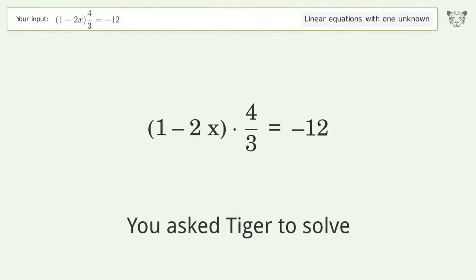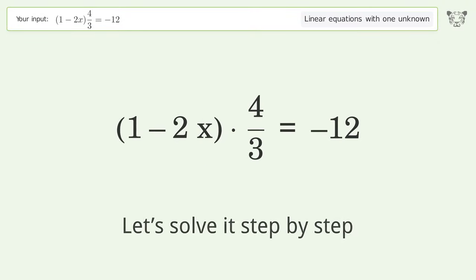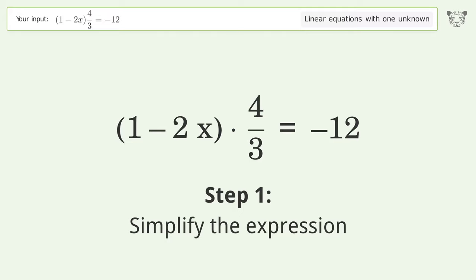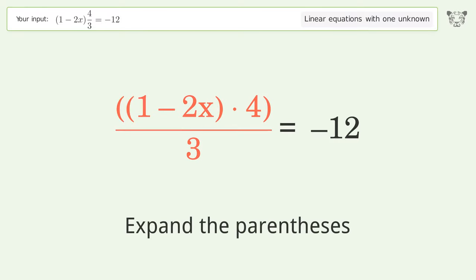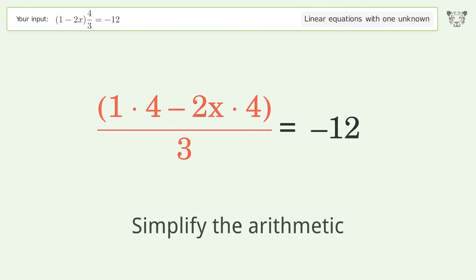You asked Tiger to solve this. This deals with linear equations with one unknown. The final result is x equals 5. Let's solve it step by step. Simplify the expression, multiply the fractions, expand the parentheses, simplify the arithmetic.